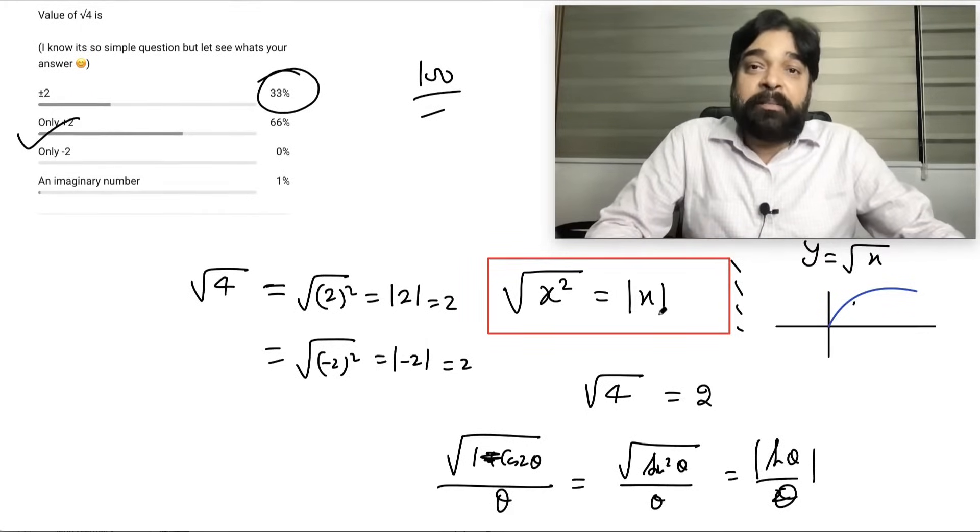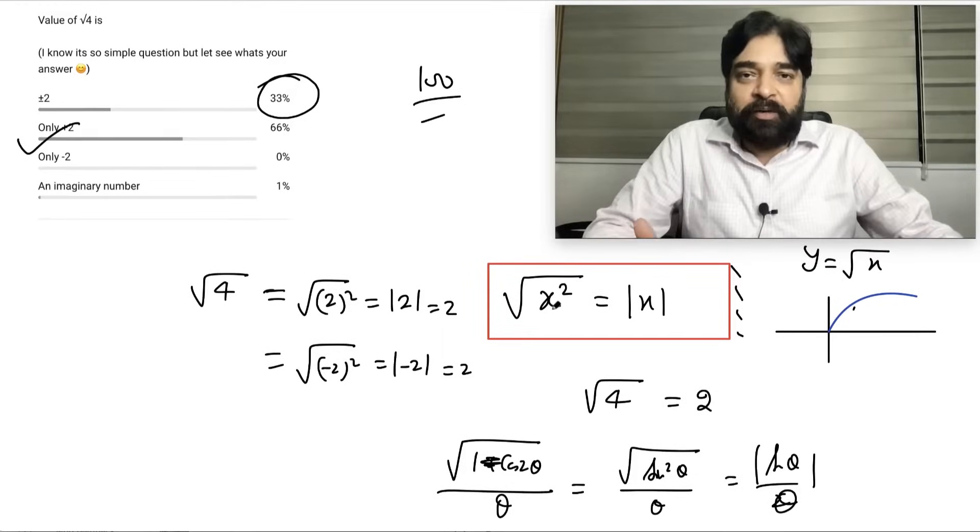So always use this logic that anyhow root x square is always equal to mod x. And mod x is nothing but magnitude and magnitude cannot be negative. So I hope this point is clear to all of you and see you in the next video. Thank you very much.